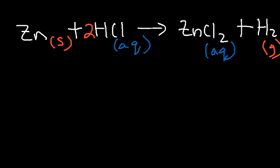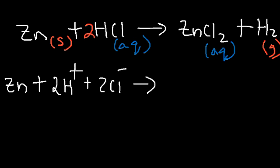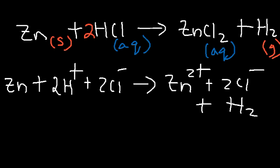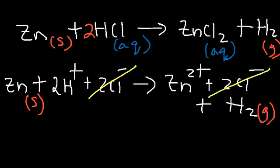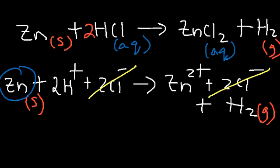To write the net ionic equation, we first write the total ionic equation. Anything in the aqueous phase is separated into ions: HCl becomes 2H⁺ + 2Cl⁻, and ZnCl₂ becomes Zn²⁺ + 2Cl⁻. Then we eliminate the spectator ions — ions that appear identically on both sides. The two chloride ions are the spectator ions. Zinc is not a spectator ion because on the left it's zinc metal and on the right it's the Zn²⁺ cation.